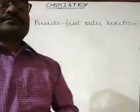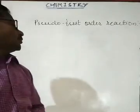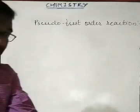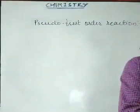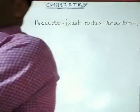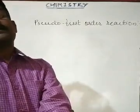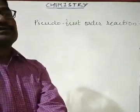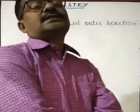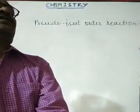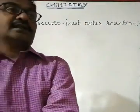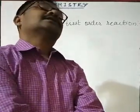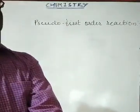Hello. The next topic is pseudo first order reaction. But first, recapping from the last class: a zero order reaction is a reaction in which the rate of reaction is directly proportional to the concentration of reactants raised to power zero. This means the reaction rate is independent of the concentration of reactants — it remains constant throughout. That is called a zero order reaction.